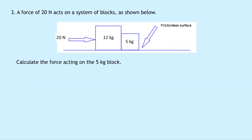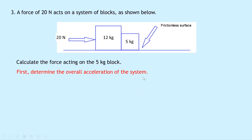Question three says a force of 20 Newtons acts on a system of blocks on a frictionless surface. Calculate the force acting on the five kilogram block. Whenever you see two masses side by side or connected together, this is called a connected system. The trick is to first determine the overall acceleration of the system using Newton's second law. The force is 20 Newtons, and the total mass is 12 plus five, which equals 17 kilograms.